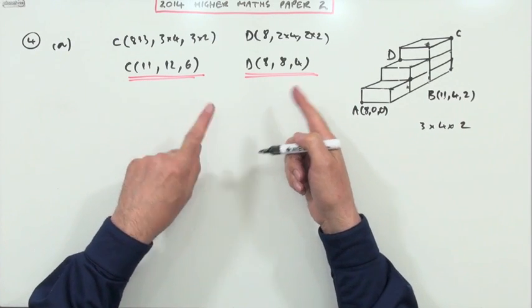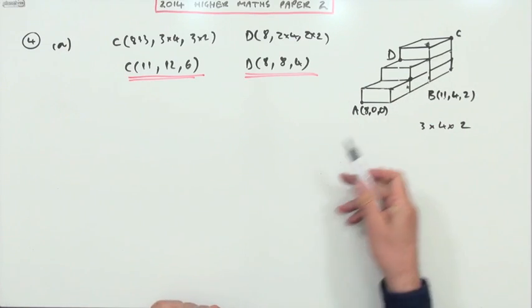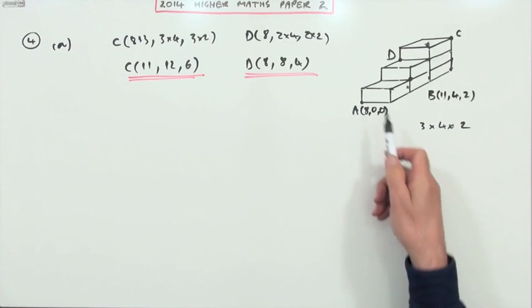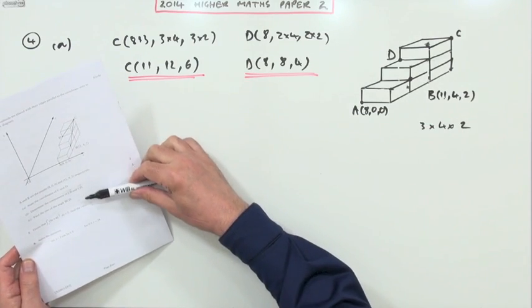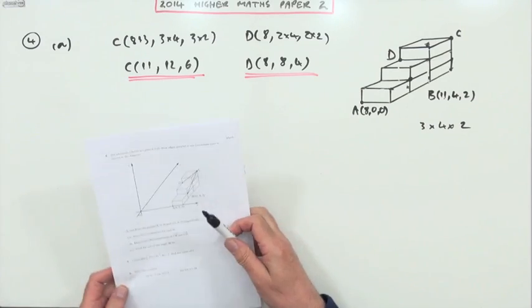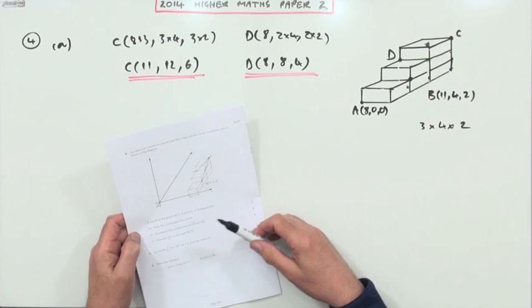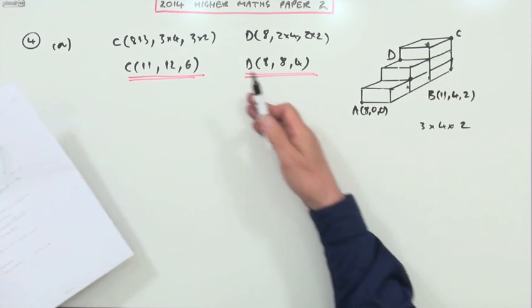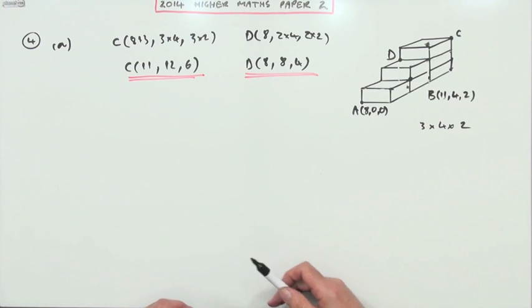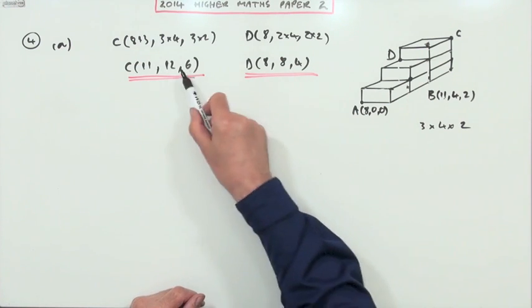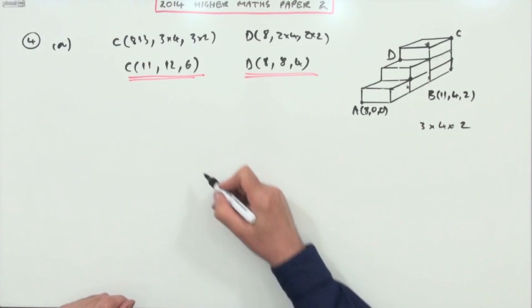Now I'd imagine there'd be quite a bit of scope for error then in what folk might put down for these coordinates, trying to figure the way around that diagram. And there's still the rest of the question to go that we're going to use these numbers. But that's their own fault, because whoever's marking it is going to have to sort through all the working over and over again for those little mistakes that will probably crop up.